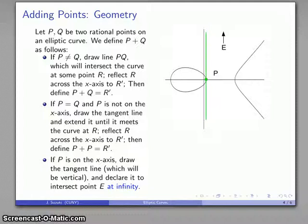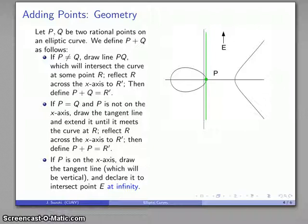It's worth noting that these operations can be done purely geometrically and have meaning whether or not p, q, and r are rational points — this arithmetic holds for any points on an elliptic curve. Our interest, however, is in rational points specifically, and for that we need a little algebra, which we'll look at in the next video.